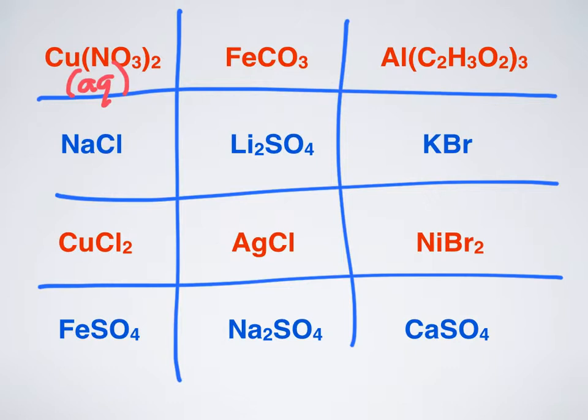FeCO3. So Fe is iron. I need to know my charge on iron, though, because my chart has two possible things, iron 2 or iron 3. And then I have CO3, which is carbonate. If you remember, carbonate has a minus 2, so that must mean that this iron has a plus 2. So I have iron 2 carbonate. If I find iron 2 carbonate, I see that that is a solid. So it is insoluble in water. It would not form a solid.